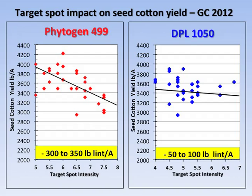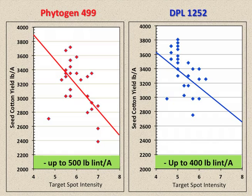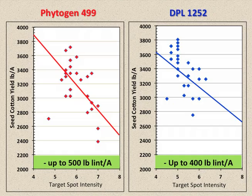In 2012, yield loss ranged from 50 to 100 pounds of lint per acre in the target spot tolerant variety DPL-1050, and up to 350 pounds of lint per acre in susceptible variety Phytogen-499. Despite slightly lower target spot damage ratings, sizable lint losses were noted in 2013, with the susceptible Phytogen-499 variety suffering lint losses up to 500 pounds per acre, as compared to nearly 400 pounds per acre for the less susceptible DPL-1252. At current cotton prices, these declines in lint yield represent an income loss of nearly $300 to $400 per acre in 3-plus bale cotton.